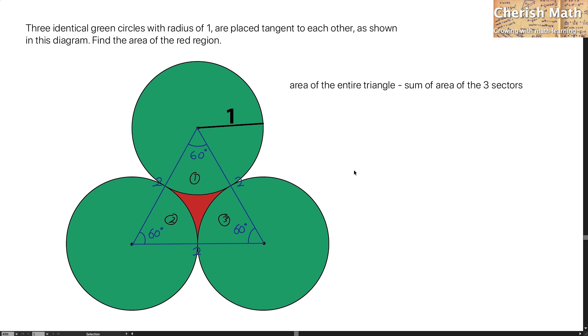Here is the calculation. This is the area of the entire triangle. And now, I have to minus the sum of the area of the 3 sectors,